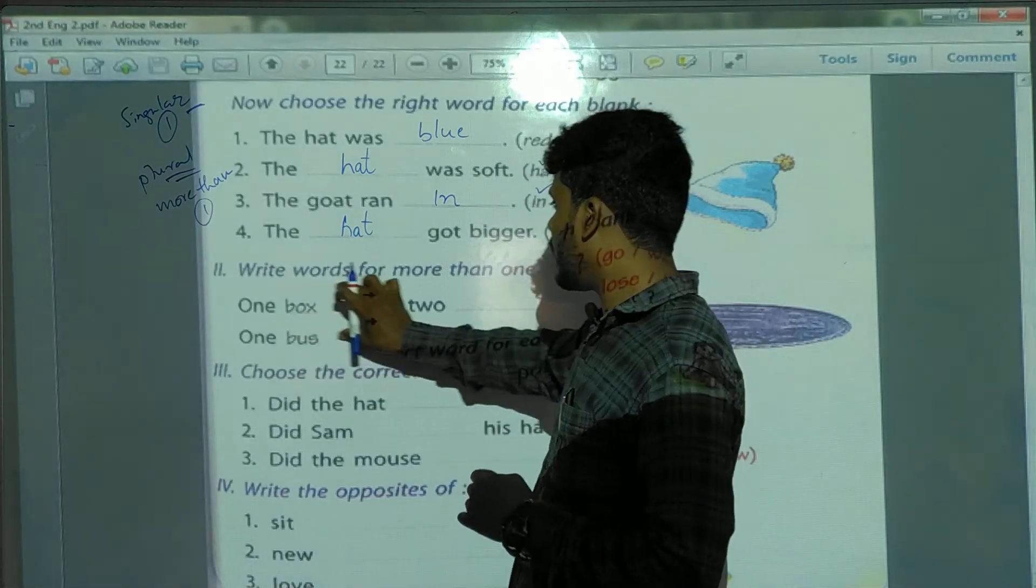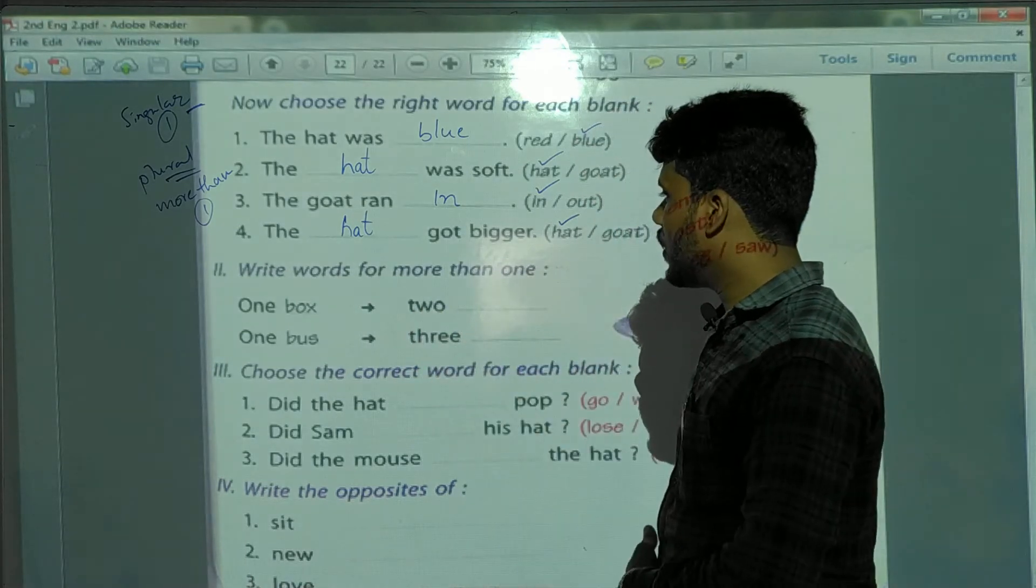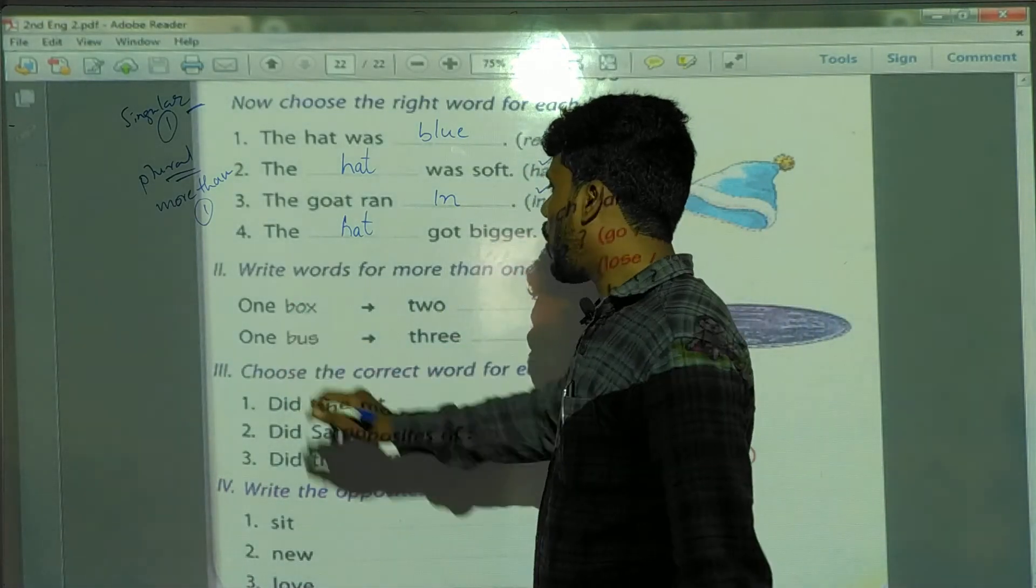So, here, in this section, we have to write the plurals of the following. Okay, one box.